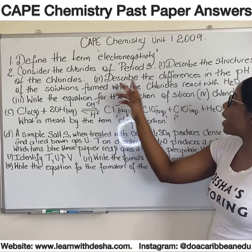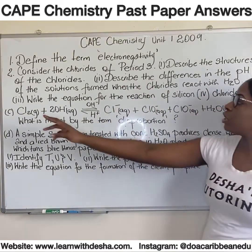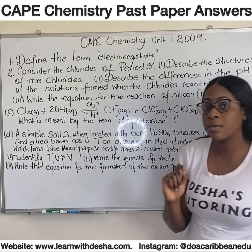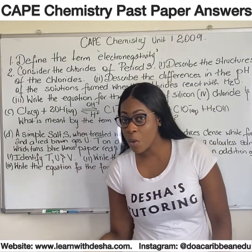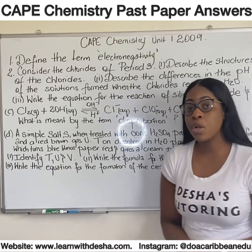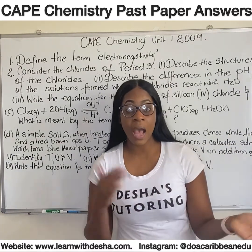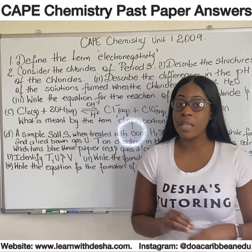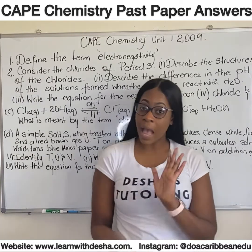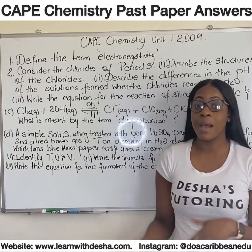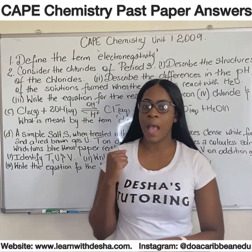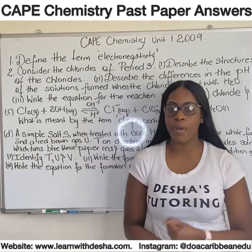The second part: describe the differences in the pH of the solutions formed when the chlorides react with water. Sodium chloride, which is an ionic compound, dissolves in water to form a neutral solution. Aluminum chloride is hydrolyzed by water to form an acidic substance. Similarly, the chlorides of phosphorus and sulfur are also acidic.